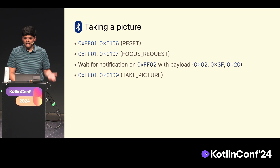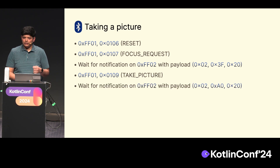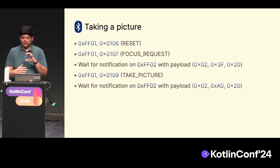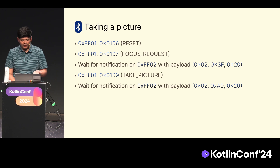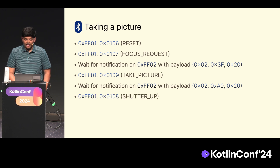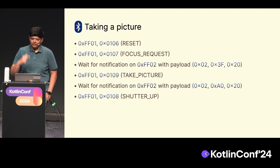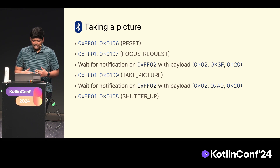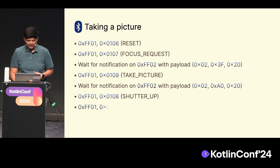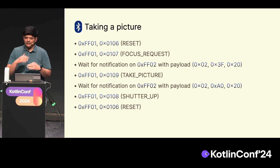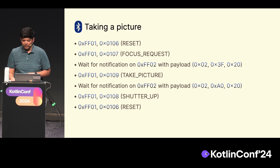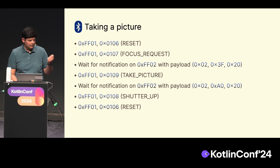Taking a picture essentially becomes the following set of operations. The camera operates like a state machine. You send hex 0106 to FF01 (reset), then 0107 to acquire focus — the camera has to literally move lenses, so it's a slightly long-running operation. The camera tells you it's ready by sending a notification on FF02 with payload 02, 3F, and 2.0. Then you take the picture by sending 0101 and 0109, wait for the shutter notification, send the shutter-up request, and finally reset. Those are all the operations for a single remote trigger button click.